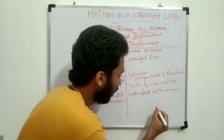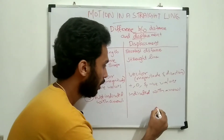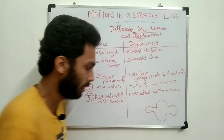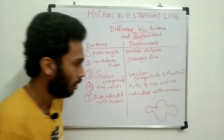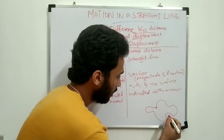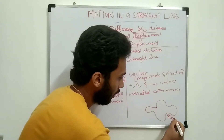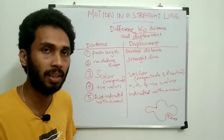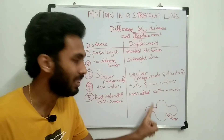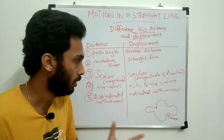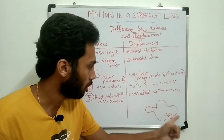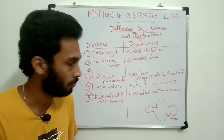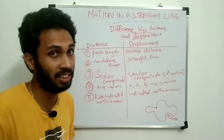Suppose this is the origin and our object is coming here — we can put it at this point. If we consider this object to cover a distance, we can consider 5 km. If we consider the distance, it is 5 km, because there is no direction dependence. So the distance is 5 km. In this case, we have a displacement.